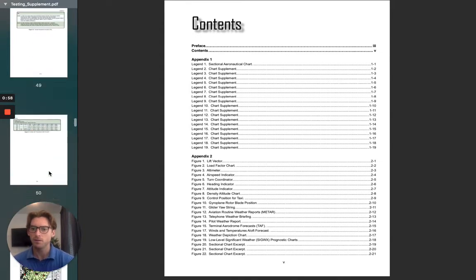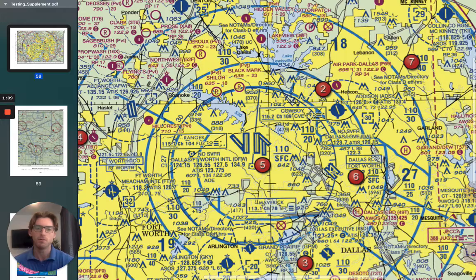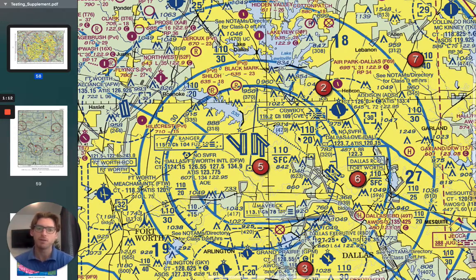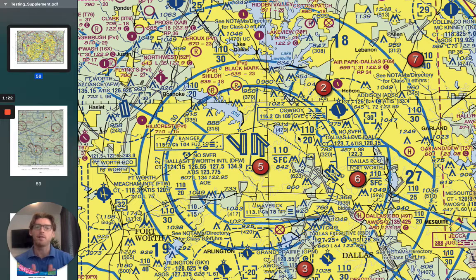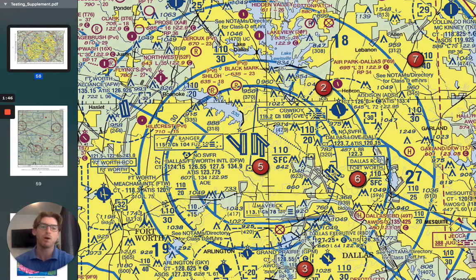All right, figure 25. So it's asking me the shelf of the Class Bravo around area 2. Remember, Class Bravo has a lot of shelves — it's specific to that airport. Usually it goes from the surface to 10,000 feet right over the airport, and then it goes to higher altitudes as you get further from the airport. Imagine a plane descending in, so it's protecting that plane as it's coming in to get lower. In area 2, I notice that we have from 1,100 and then over 3,0 — so that means it starts at 3,000 feet up to 11,000 feet.